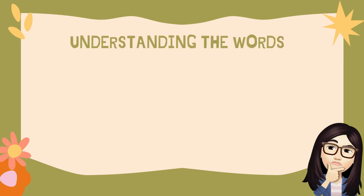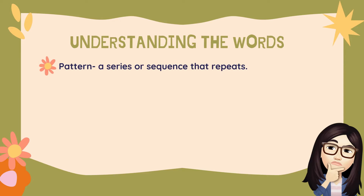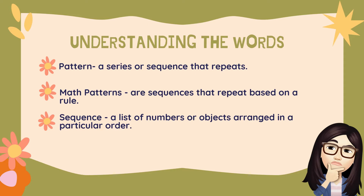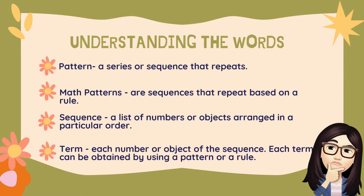Before we proceed to our lesson, let us first understand the following words. First is Pattern — a series or sequence that repeats. Next, Math Patterns — these are sequences that repeat based on a rule. Third, Sequence — a list of numbers or objects arranged in a particular order. And Term — a number or object of the sequence. Each term can be obtained by using a pattern or a rule.